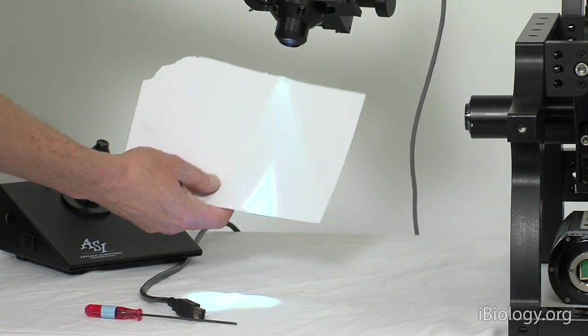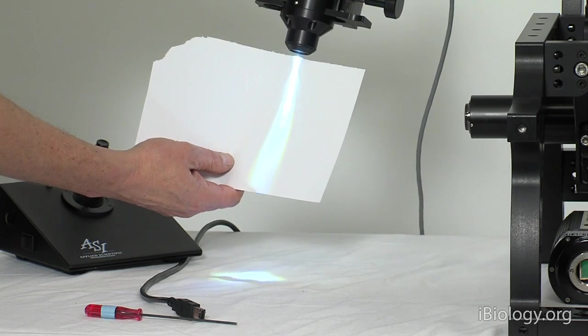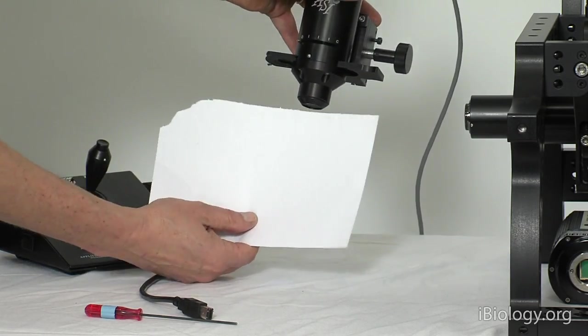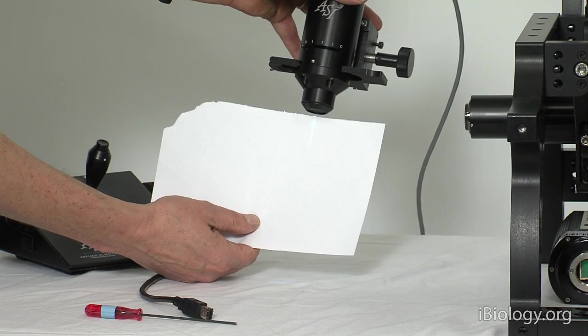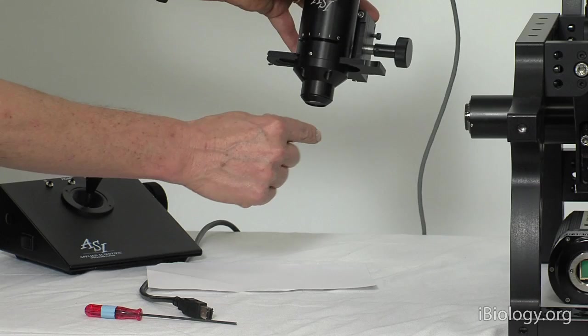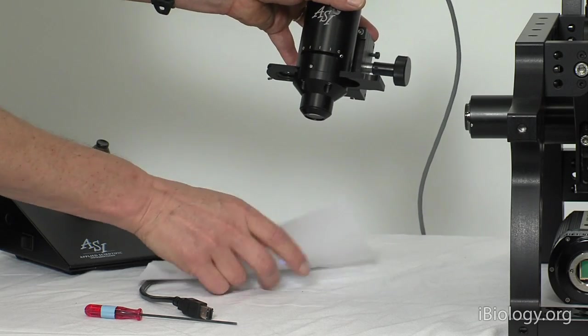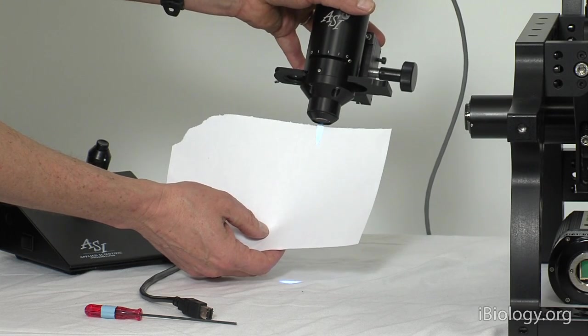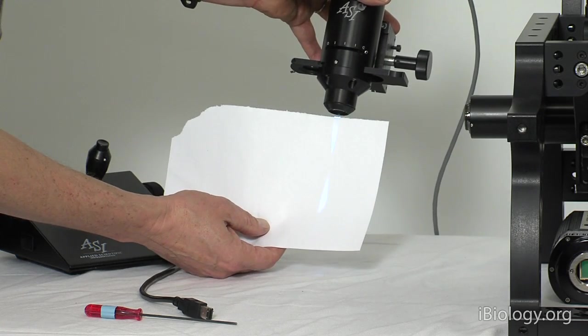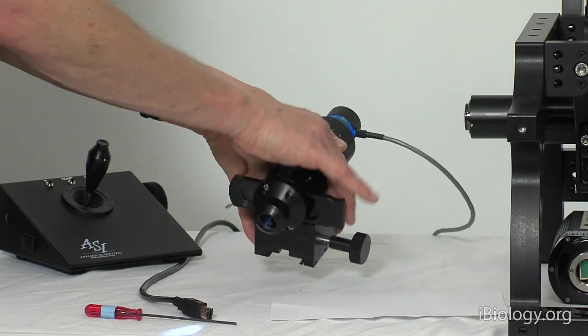When we look at the light coming out of the condenser, you can see this cone of light coming out. When you close down the field diaphragm, you'll notice that cone of light is still there, but the center point is much smaller. Whereas when you close down the condenser diaphragm, we get this small cone of light, so the angles with which we illuminate are now much shallower.